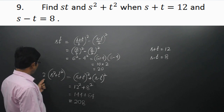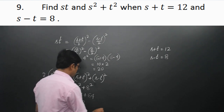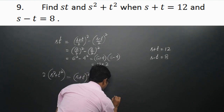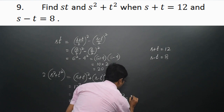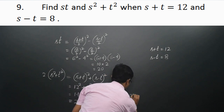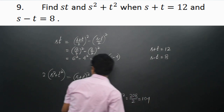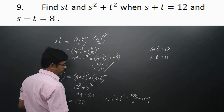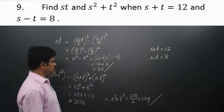So 2(s² + t²) = 208. Therefore, s² + t² = 208 ÷ 2 = 104. This is the value of st and this is the value of s² + t².